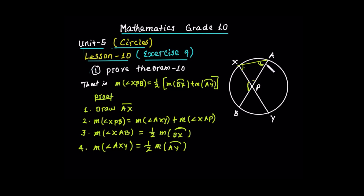Similarly, the measure of angle AXY — the subtending arc of this angle is arc AY. By the inscribed angle formula, the measure of angle AXY is equal to half the measure of arc AY.